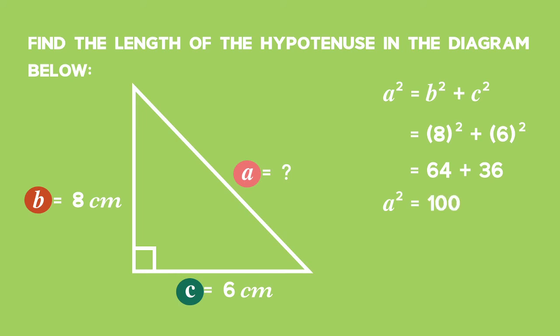But we're looking for A, which is the length of the side of the triangle. So therefore, I take the square root of both sides and I get that A is equal to 10.